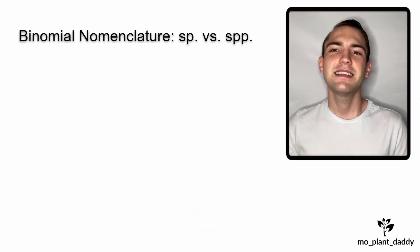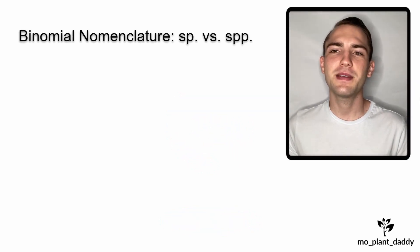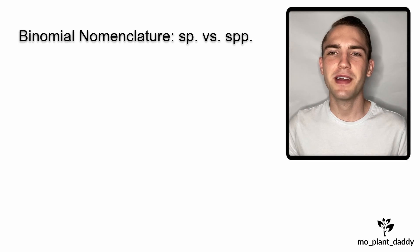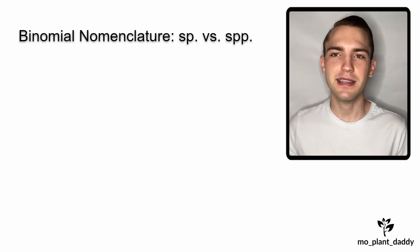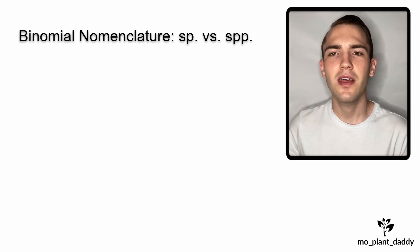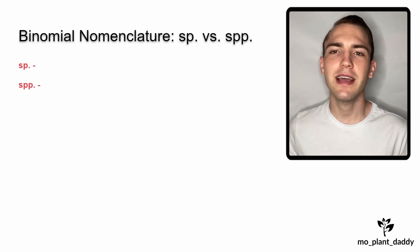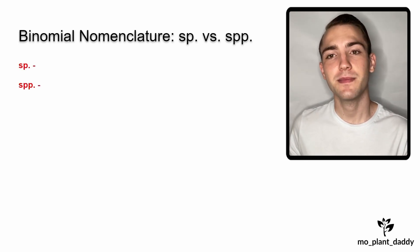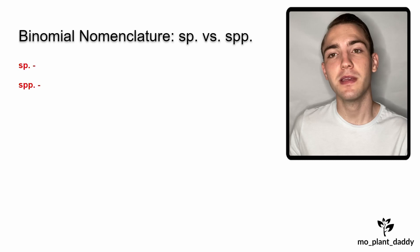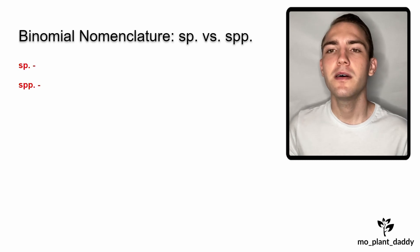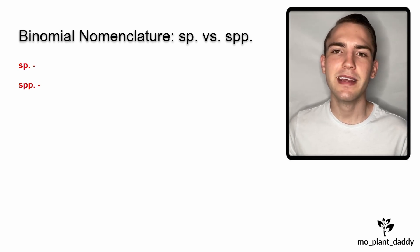Hi everyone! Today we're going to be talking about the different ways to write the word species, which can be written as SP or SPP. Both of these ways have their own meanings and can get confusing.